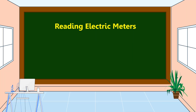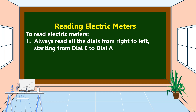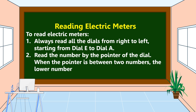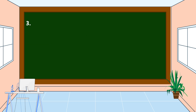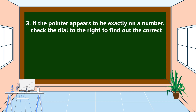Reading electric meters: to read electric meters, always read all the dials from right to left, starting from dial E to dial A. Read the number indicated by the pointer of each dial. When the pointer is between two numbers, the lower number is recorded. If the pointer appears to be exactly on a number, check the dial to the right to find out the correct reading.